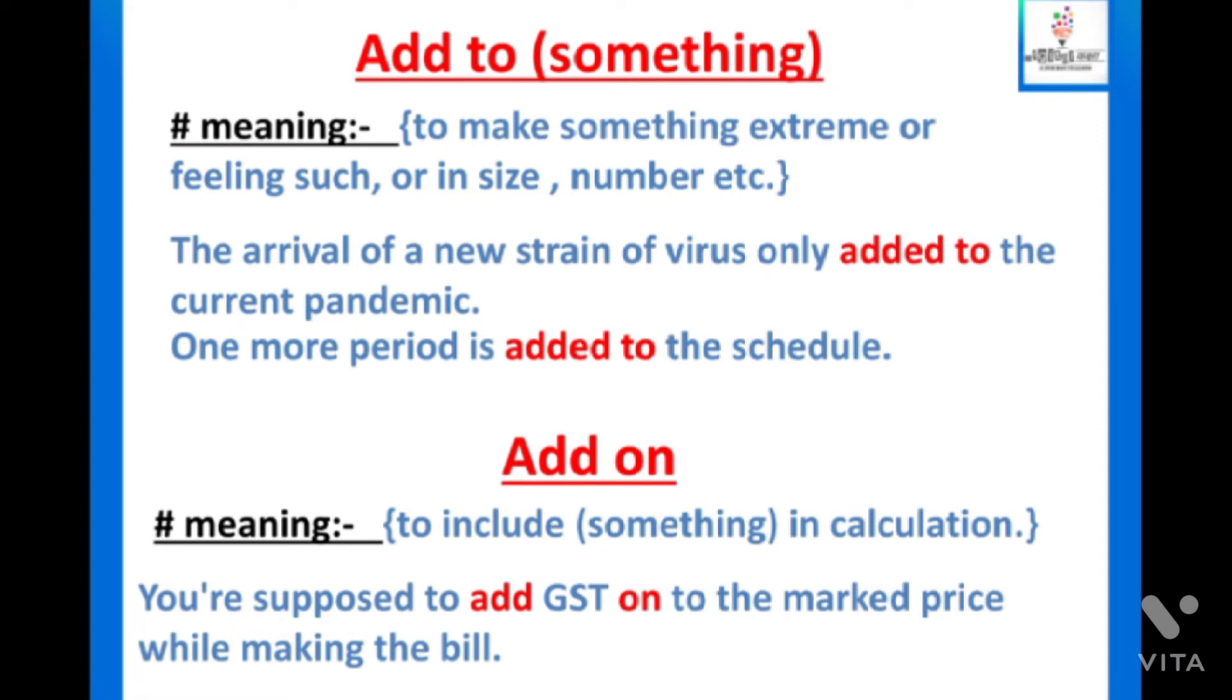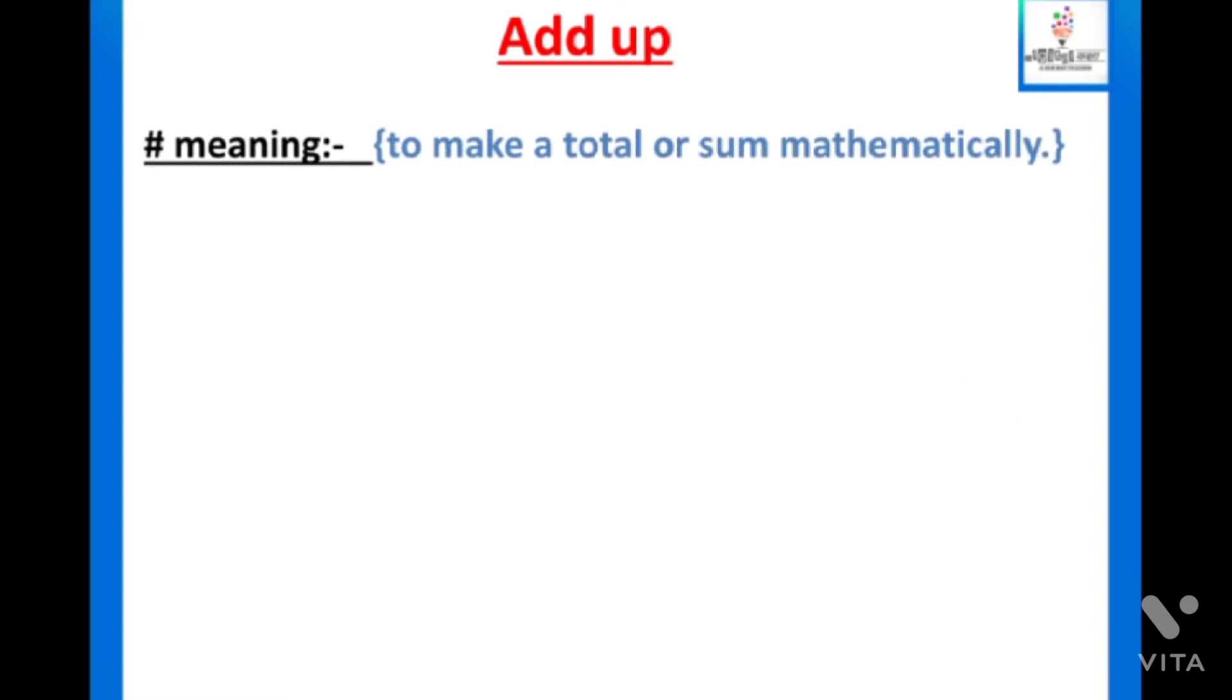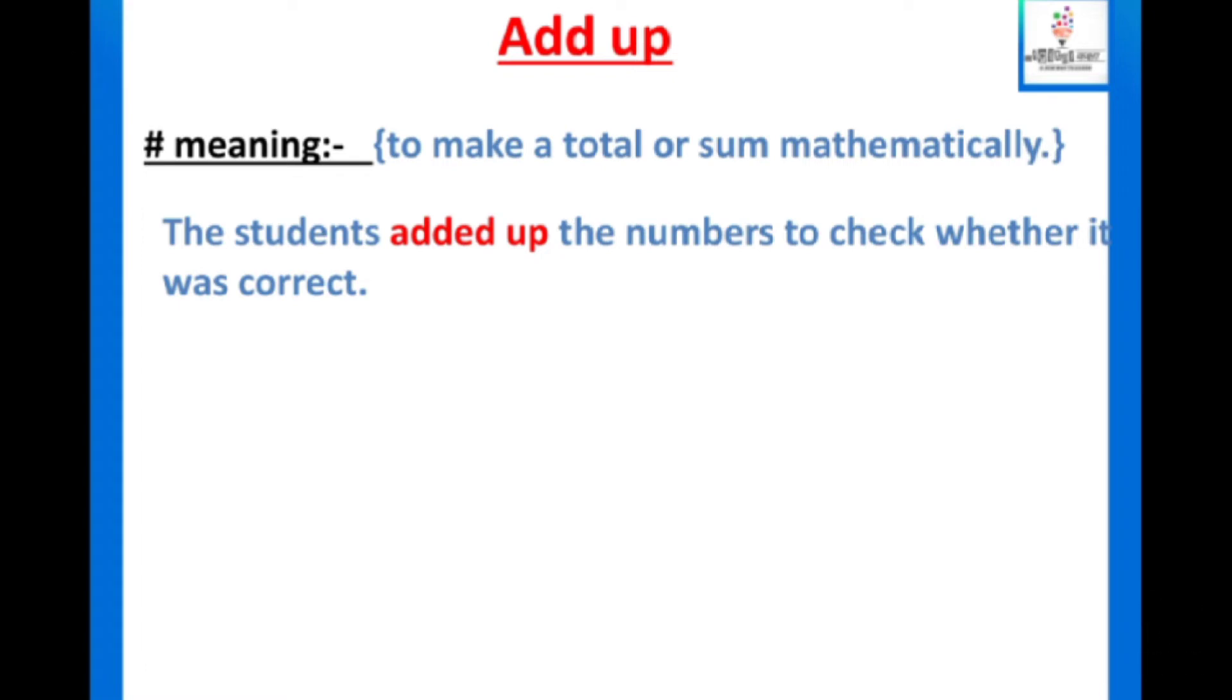Now see the third one, that is add up. It has different meanings. To make a total or sum mathematically. Simply add up. The students added up their numbers to check whether it was correct. They were doubting if it was correct or not, so they calculated the numbers mathematically. That is add up.